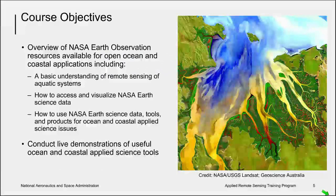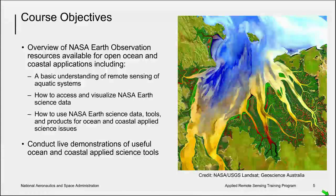Recall from last week, the course objectives are to provide an overview of NASA Earth observation resources available for open ocean and coastal applications, including a basic understanding of remote sensing of aquatic systems, how to access and visualize NASA Earth science data, how to use NASA Earth science data tools and products for open ocean and coastal applied science issues, and to conduct live demonstrations of useful ocean and coastal applied science tools.